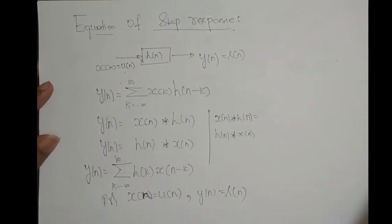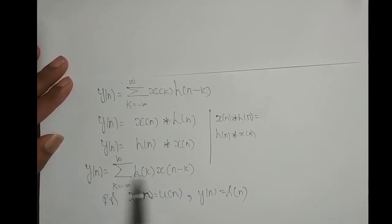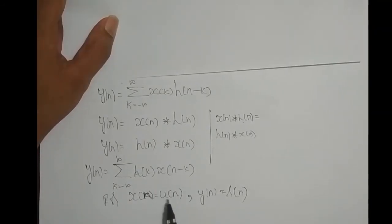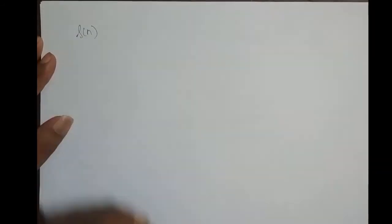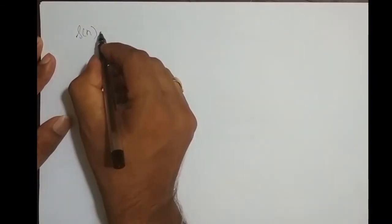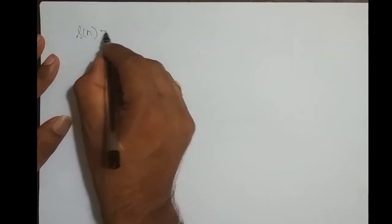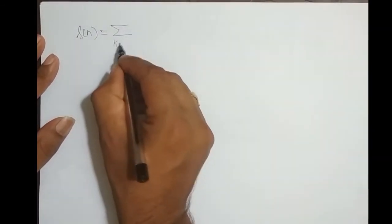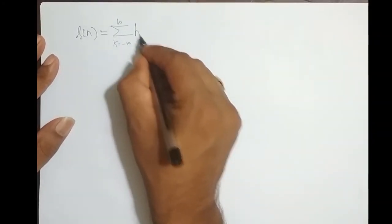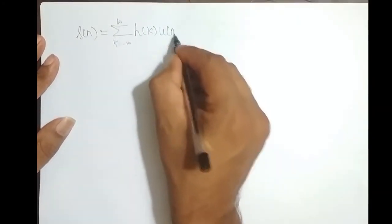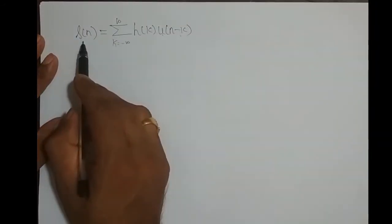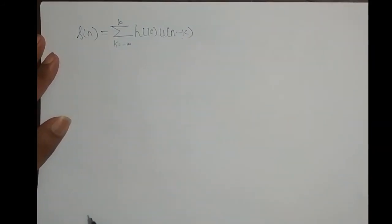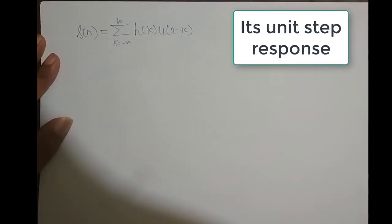Replacing x(n) with u(n) in the equation, y(n) becomes s(n). Therefore, s(n) = summation from k = −∞ to ∞ of h(k)·u(n−k). Previously it was x(n−k); I replaced it by u(n−k), so the output y(n) becomes s(n), the step response.